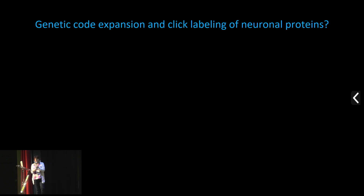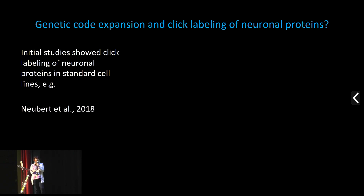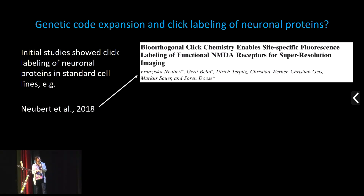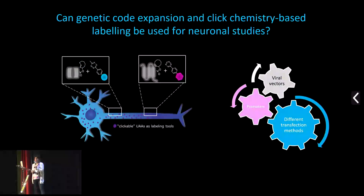There are also other methods to increase incorporation yield — using engineered release factors or designer tRNAs. In my group we are interested in neurobiology and different neuronal proteins, which tend to be sensitive to conventional modifications. Some studies after this labeling was developed also showed click chemistry labeling of neuronal proteins in standard cell lines — for example, different receptors and amyloid beta protein.